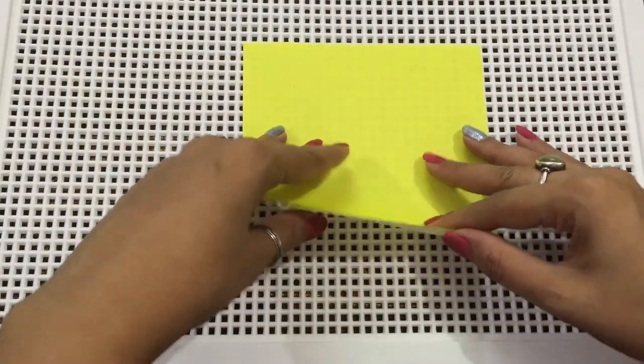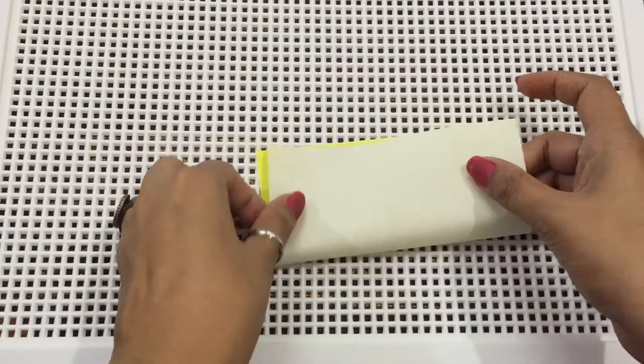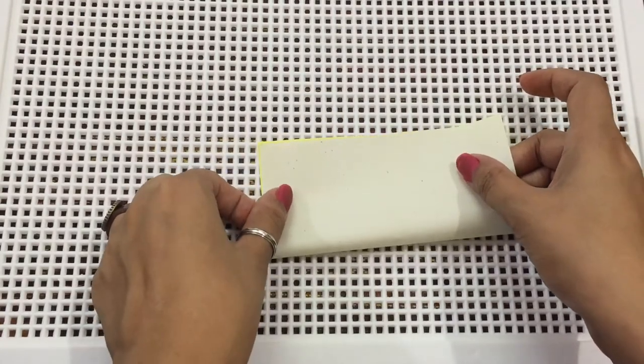So for that we need a square piece of paper. Fold it into half.